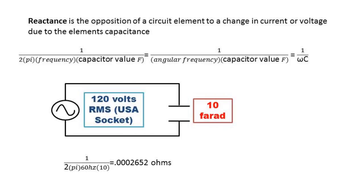Looking at the equation to find reactance, you can see that the higher the frequency or the higher the capacitance, the lower the reactance. It's important to note that the unit for reactance is the ohm, and the reactance for a capacitor is commonly abbreviated as Xc.